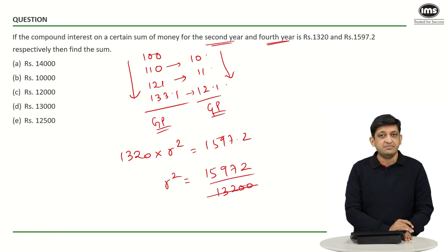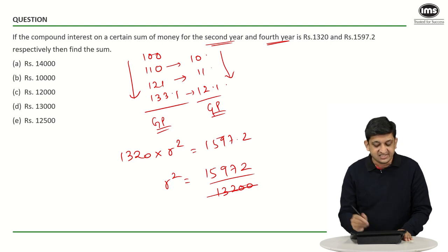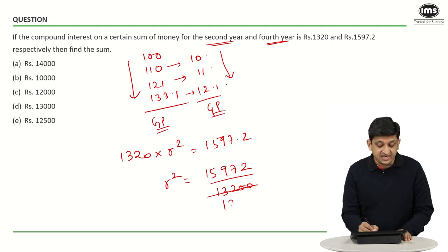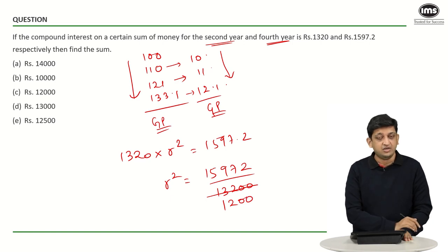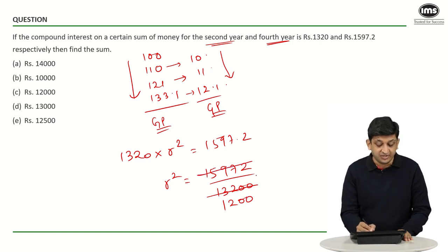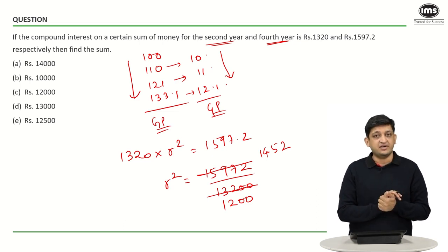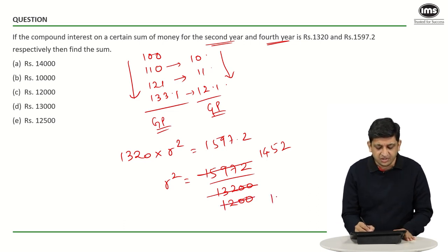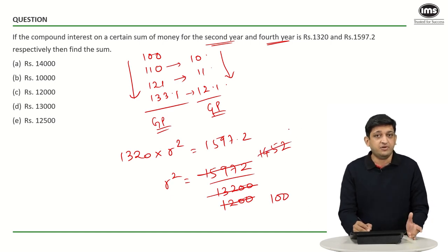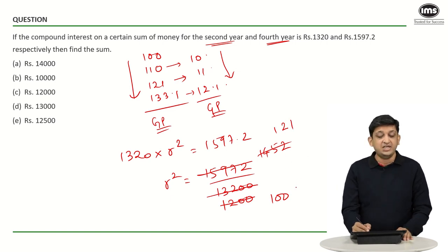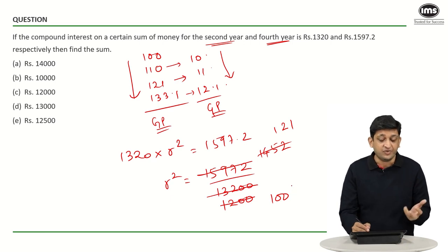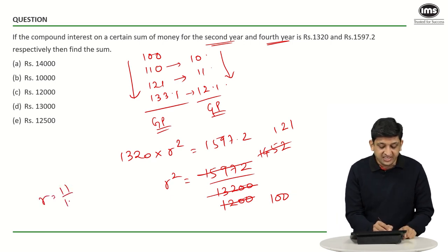Dividing 1597.2 by 1320: cancelling 11 from both, we get 1452 by 1200. Cancelling 12 from both, we get 121 by 100. So R² equals 121 by 100, which means R equals 11 by 10, that is 1.1.